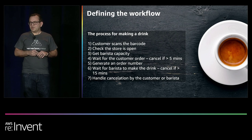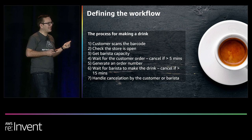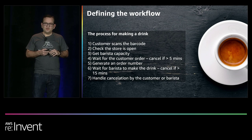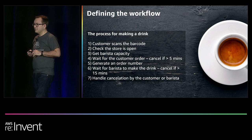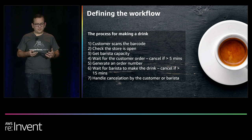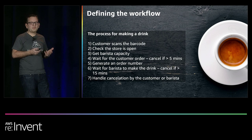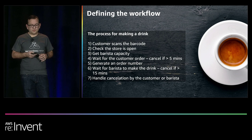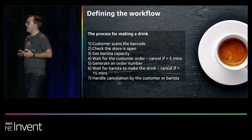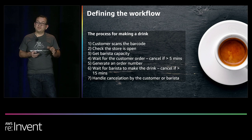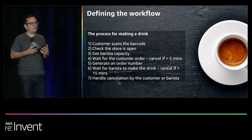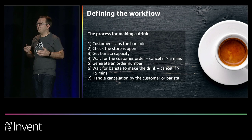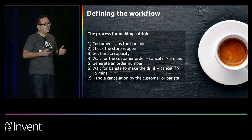We locked ourselves in a room with a whiteboard and figured out the workflow. We came down to seven basic steps: the customer scans the barcode, we check if the store is open, we check that the barista has capacity, we wait for the customer to select their drink — giving them up to five minutes before timing out — we generate an order number, we wait for the barista to make the drink giving them 15 minutes, and finally we handle cancellations by customers or baristas.